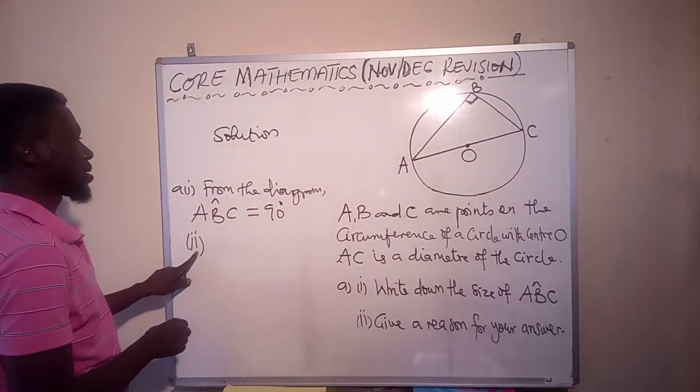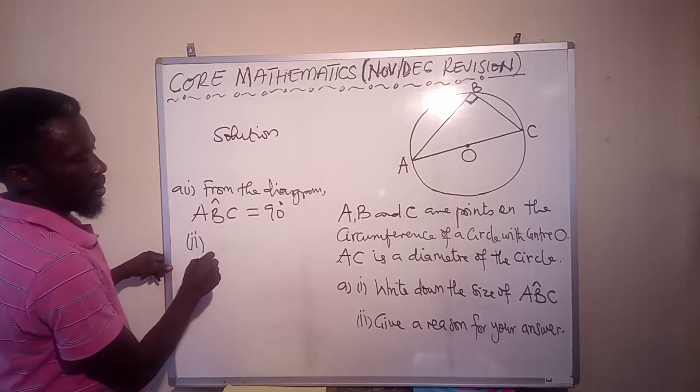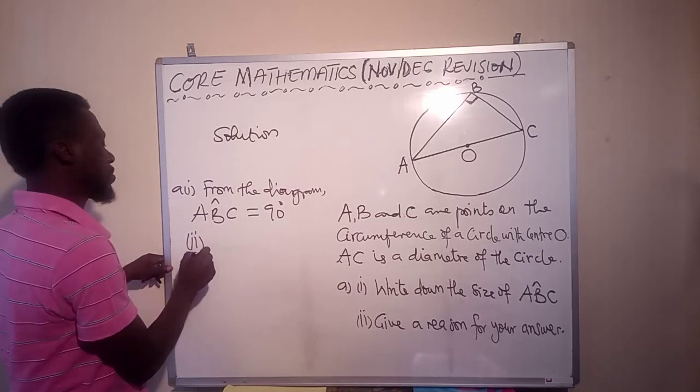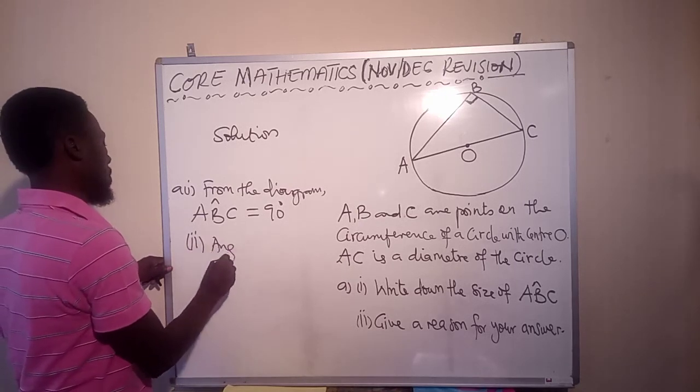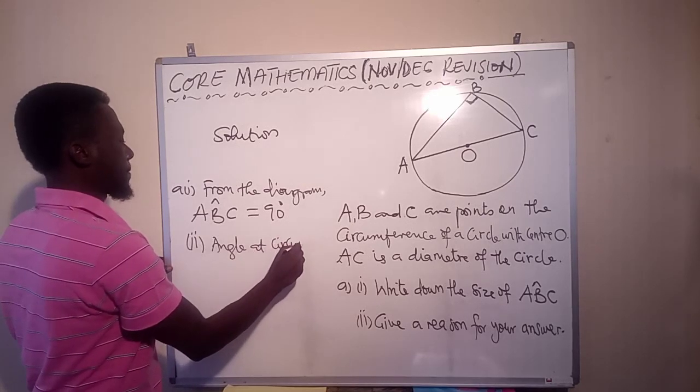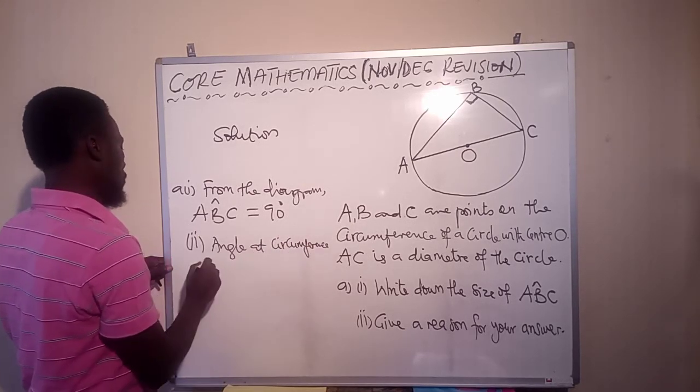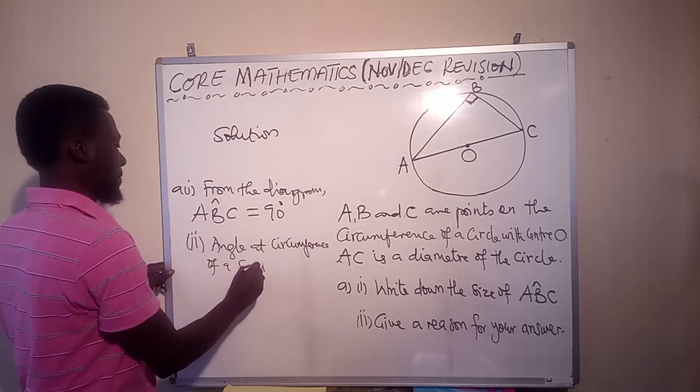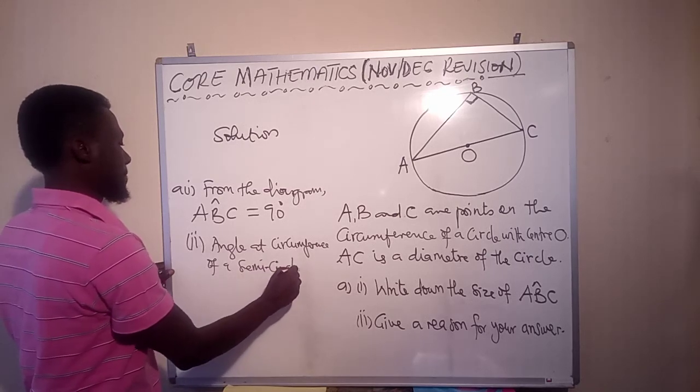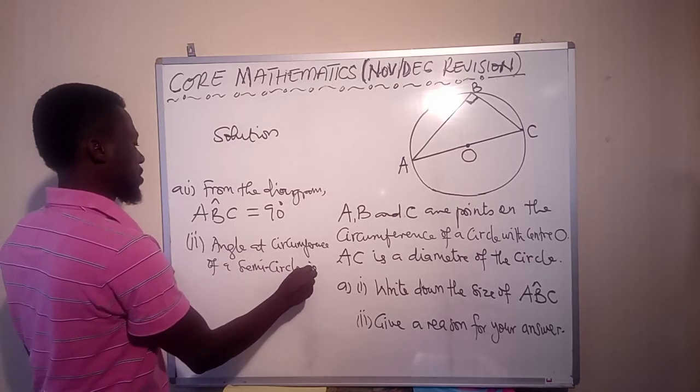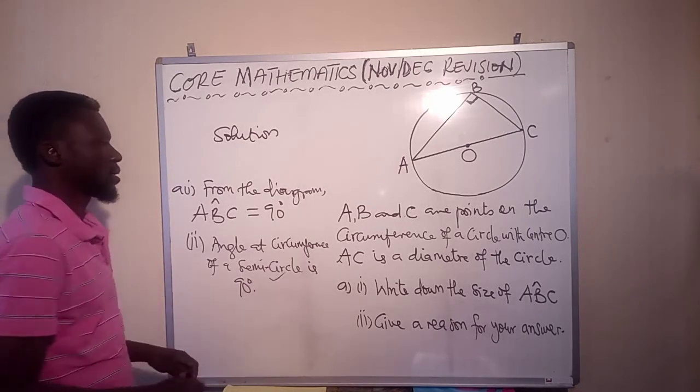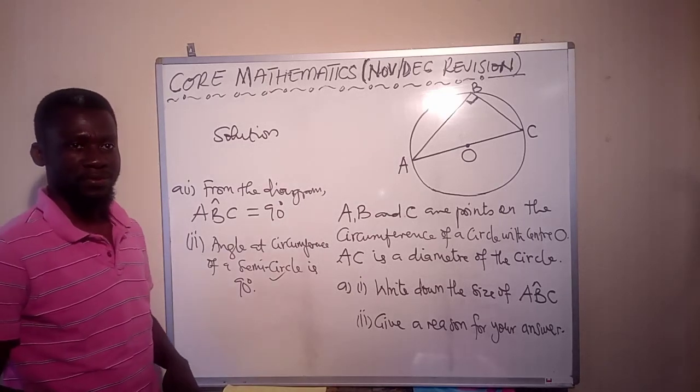All right. So we say that the reason is angle at circumference of a semicircle is equal to 90 degrees. So angle at circumference of a semicircle is 90 degrees. And that is the answer to this one.